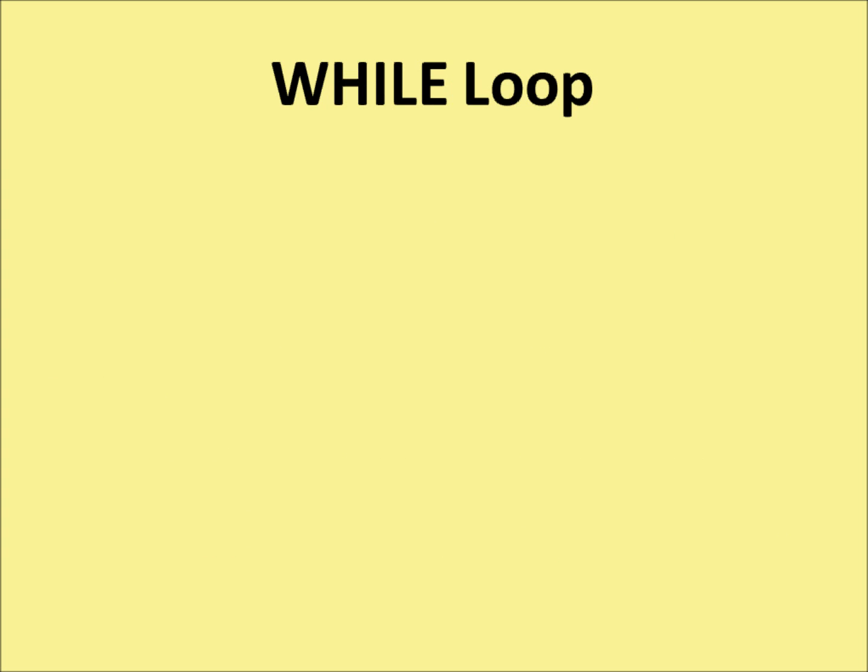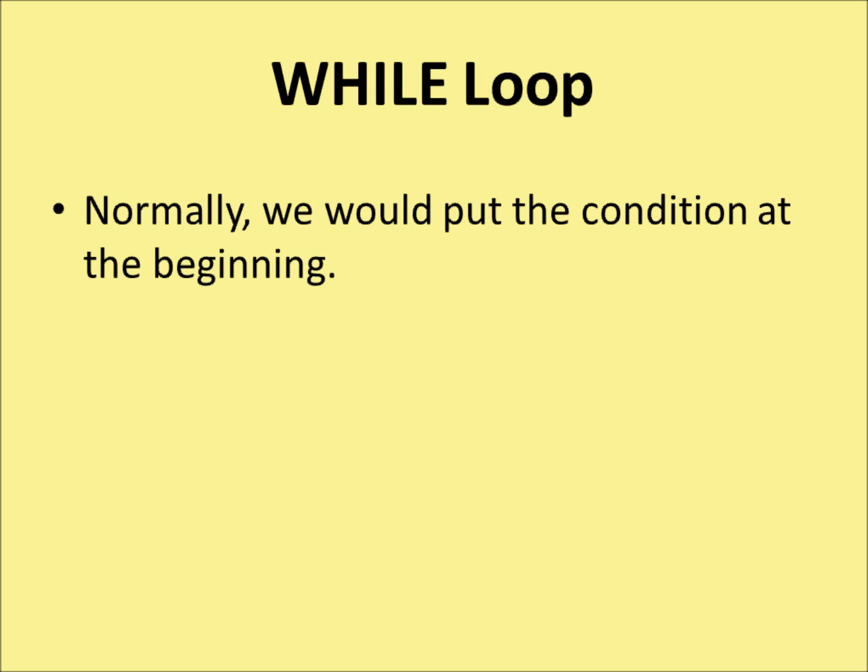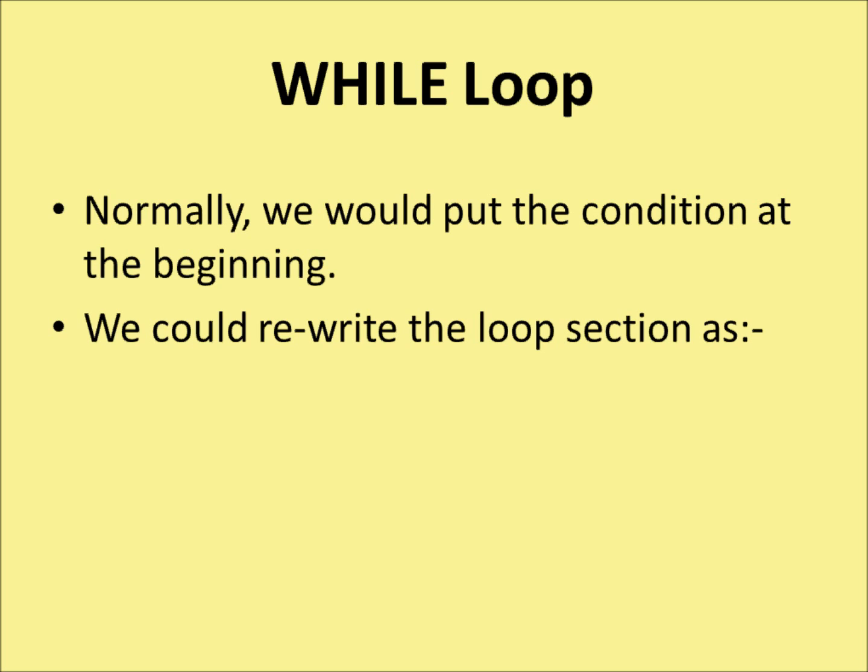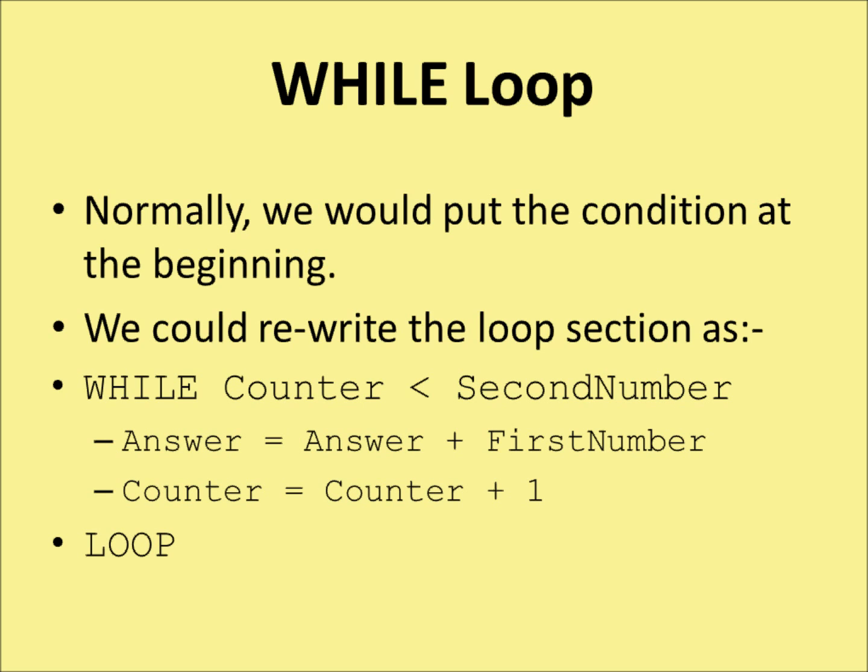The second kind of loop is a while loop. Normally we'd put the condition at the beginning of a loop. We could rewrite the loop section as: while counter is less than the second number. We start off with counter being 0, so we're only interested in those times round the loop where counter is less than the second number. The internal bits of the loop stay exactly the same: answer equals answer plus first number, counter equals counter plus 1. When counter becomes the same as the second number, we stop. That gives us the same answer of 6.